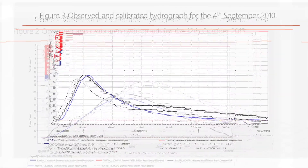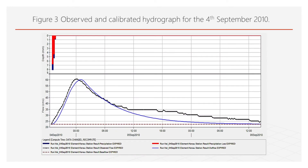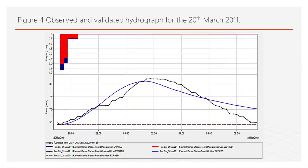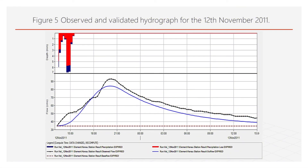A similar trend is observed in Figure 3, where the simulated peak flow for the 4th September 2010 validation event is 60.1 m³/s, which is close to the observed peak flow of 60.6 m³/s. For the validation event of 20th March 2011 in Figure 4, the simulated peak flow is 81.2 m³/s compared to the observed peak flow of 81.2 m³/s. For the 12th November 2011 event, the simulated peak flow is 84.4 m³/s compared to the observed 93.1 m³/s in Figure 5.